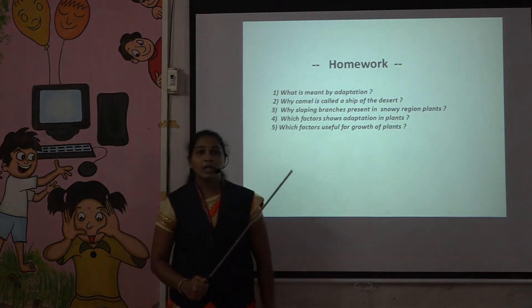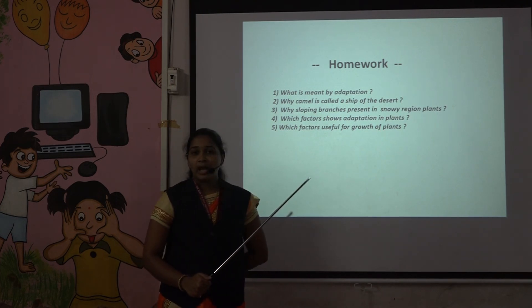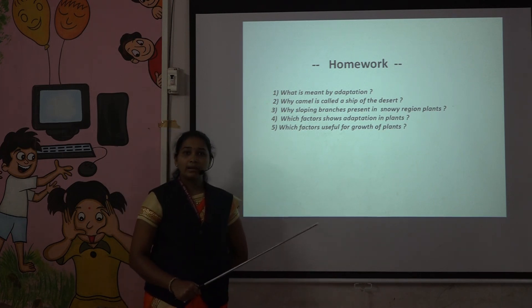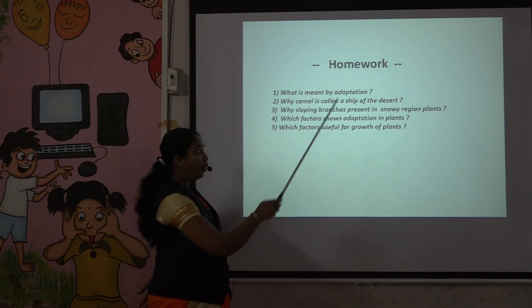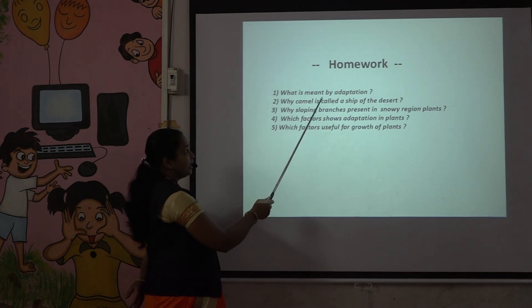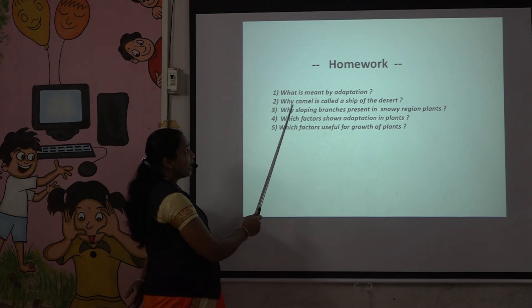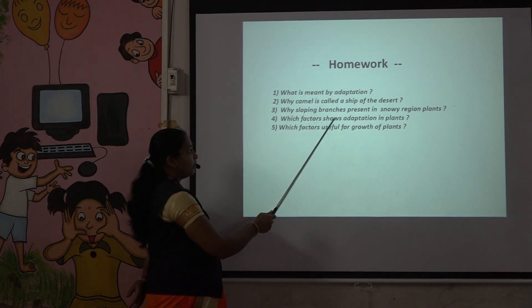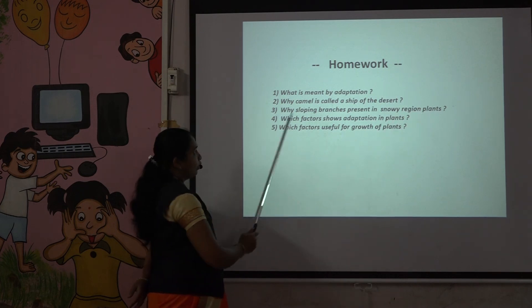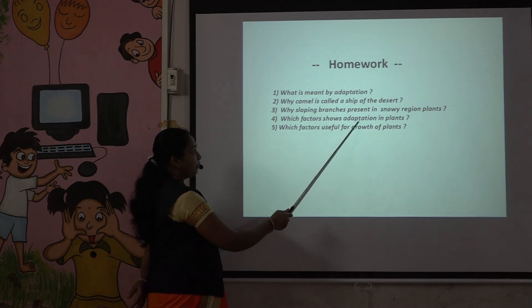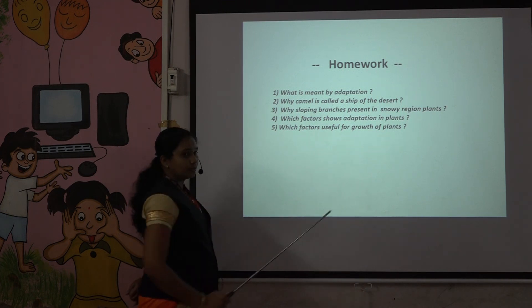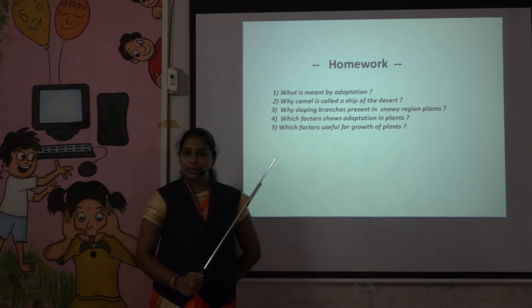In this session, we learned about adaptation and also adaptation in aquatic, desert, grassland, snowy region, and forest plants. I hope you understood all the parts properly. Now let's review. Question 1: What is meant by adaptation? Question 2: Why is the camel called the ship of the desert? Question 3: Why are sloping branches present in snowy region plants? Question 4: Which factors show adaptation in plants? Question 5: Which factors are useful for the growth of plants? Do this homework at home today. Thank you.